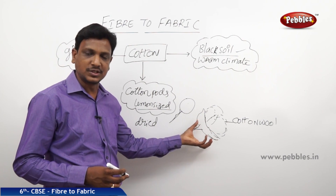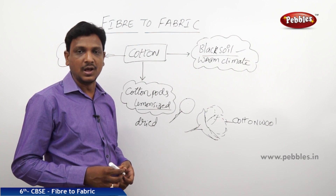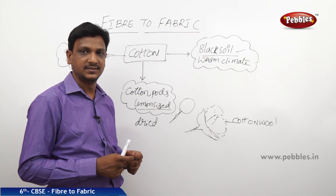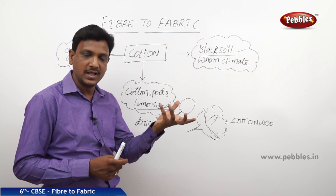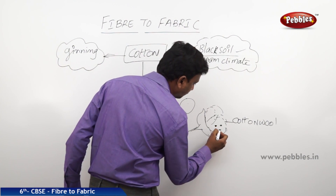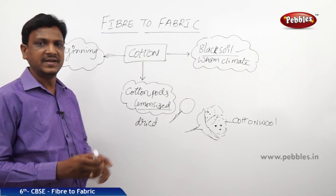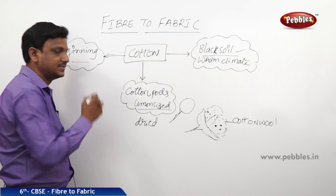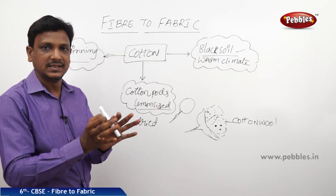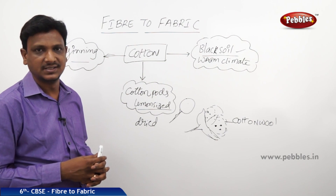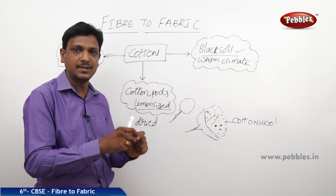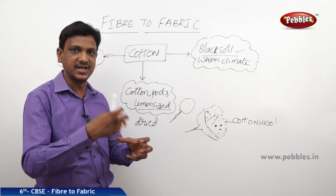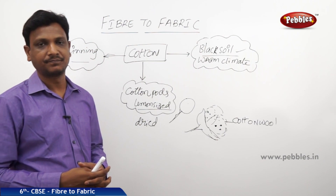They will pick all the cotton pods which have burst open. To get the cotton fibers, the fibers have to be separated from the cotton wool. The cotton wool has seeds embedded in it. They remove all the seeds and separate the cotton fiber. This process is called ginning. Ginning is the process in which cotton seeds are separated from the cotton wool. This is done by hand in most places, but nowadays machines are used to do the process quickly and effectively.